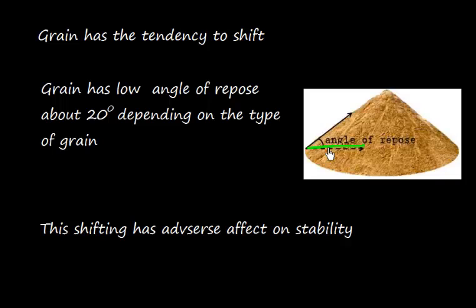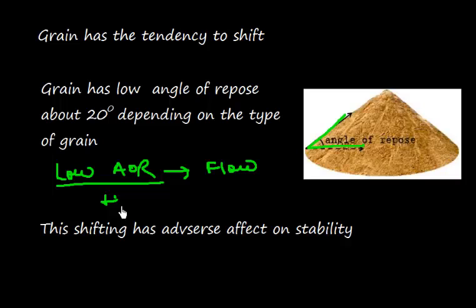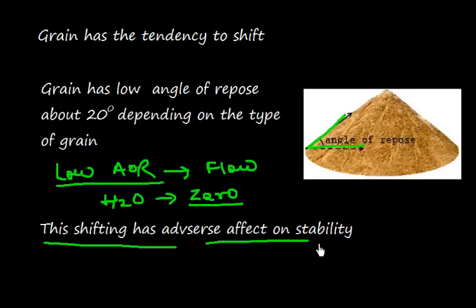Materials having low angle of repose—let me repeat this—if the material has a low angle of repose, that means the material is likely to flow easily. For example, water has an angle of repose of zero and flows very easily. Any material with low angle of repose will flow easily.